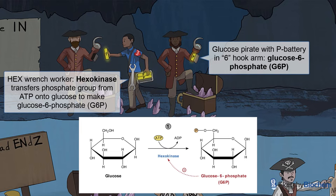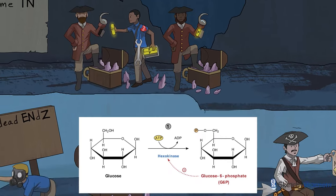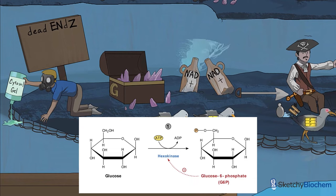He's wearing a kind button to remind you that he's a kinase, which transfers phosphate groups from ATP to substrates. We'll be using kind buttons to represent all kinase characters. We've included a waterfall to show that this step is irreversible.